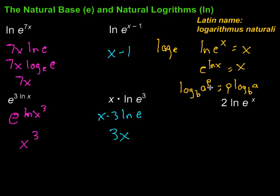And finally, this last one, we have 2 times ln of e to the x. Again, I can take that x and pull it down in front, and have 2 times x times ln of e. That's just 1, so 2 times x times 1 is just 2x.